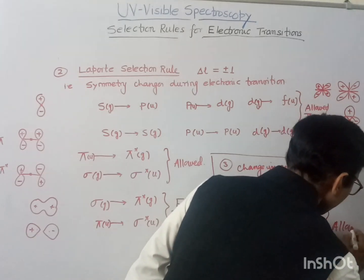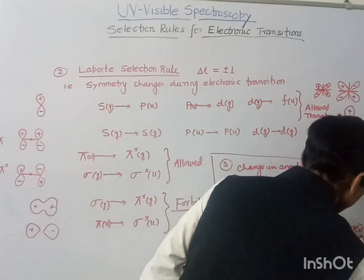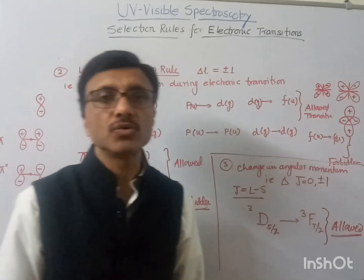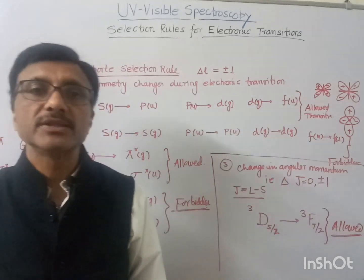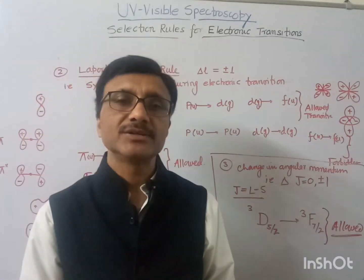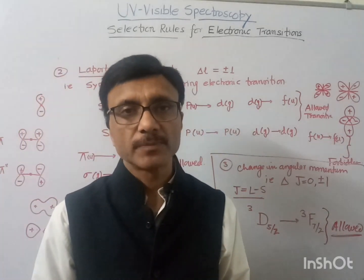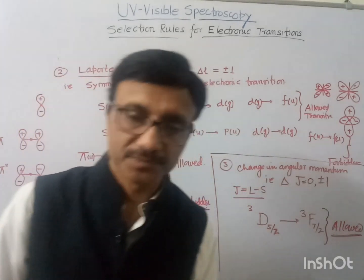These are the three selection rules — spin selection rule, Laporte selection rule, and angular momentum rule — that should be followed to determine whether an electronic transition is possible or not. Thank you.